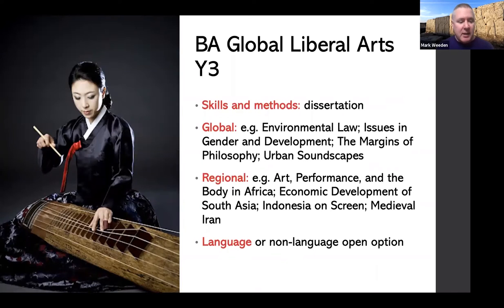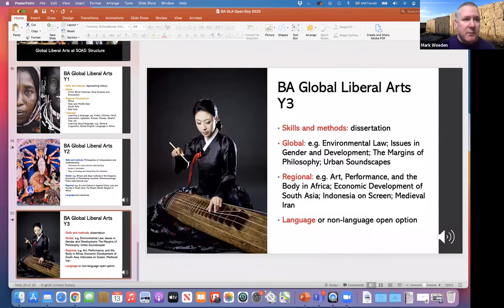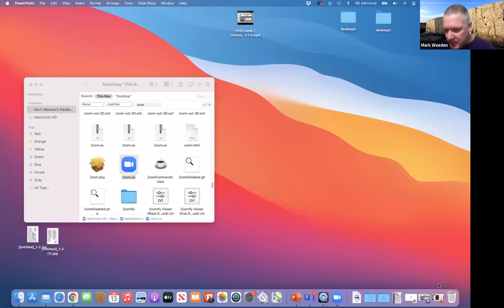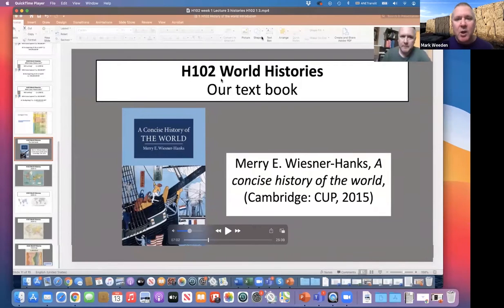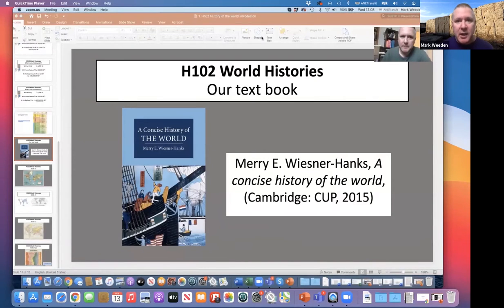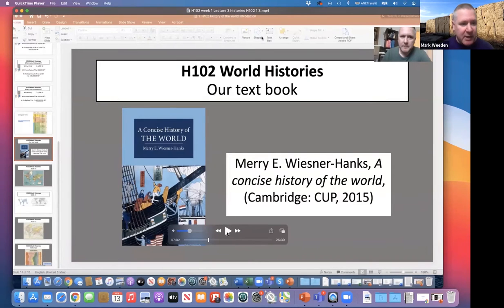In the third year, the skills and methods track ends with a dissertation — a 10,000-word essay on a topic of your choice. You continue with the global track, the regional track, and you can continue with language or literature. I'm going to give you a short excerpt from a lecture the students were given this year as part of the H102 World Histories course — the introductory session. I'll play this back to you, and then we can have a Q&A on anything we've talked about.